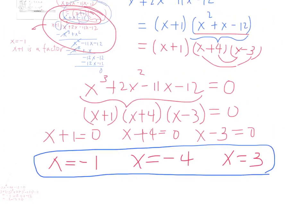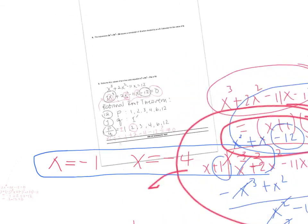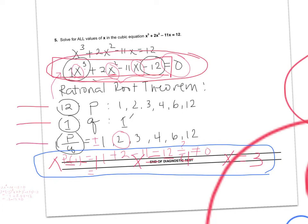It seems like a very long solution, but the idea is to break the cubic equation down into its factored form. You have to get p, get q, then get p over q, and then one by one try what will work. If you're lucky enough to get the right number quickly, that makes it easier. If you find the solution quite long, I suggest you watch the video again from the beginning.